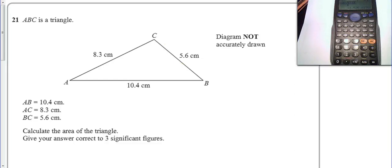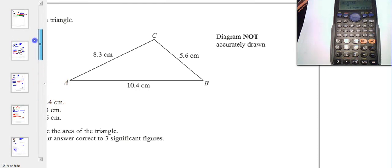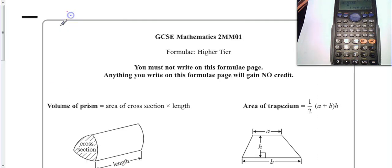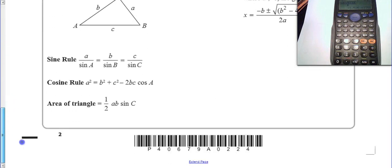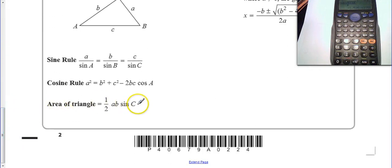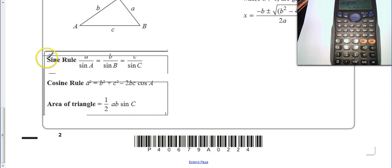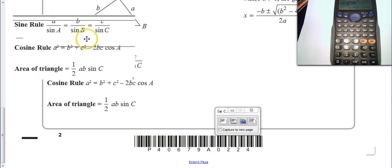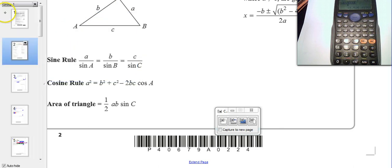Okay, so question number 21. This is quite a tricky little question, and we've got to keep our wits about us. We're going to have to use the formula sheet. Now it says calculate the area of the triangle. If we have a quick look back, the area of the triangle here.